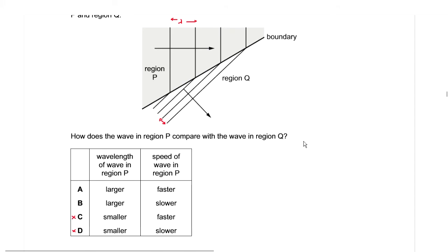We now choose between option A and option B. Using the formula V = f × λ: during refraction, wavelength and speed change but frequency remains constant. Since the wavelength in region P is greater and frequency is constant, the speed in region P will also be greater. Therefore, the wave in region P is faster, making option A the correct answer.